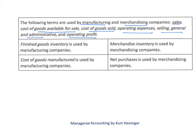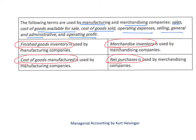Then we get to some of the differences in terminology between a merchandising company and a manufacturing company. A merchandising company will typically use merchandise inventory as the account name, or something similar, to reflect the cost of inventory on hand. Manufacturing companies use the term finished goods inventory to mean essentially the same thing — these are goods completed by the manufacturing company and ready to sell, appearing on the balance sheet under assets. Manufacturing companies use cost of goods manufactured, while merchandising companies use net purchases, and both terms reflect the cost of goods coming into finished goods inventory or merchandise inventory.